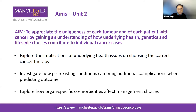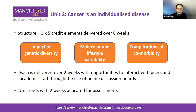The structure of Unit 2 is that it's made up of three five-credit elements delivered over eight weeks. Each of the three elements is delivered over a two-week time span, and these cover the impact of genetic diversity, molecular and lifestyle variability, and complications of co-morbidity. The final two weeks of the unit are allocated for assessments.